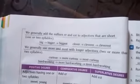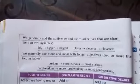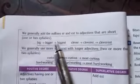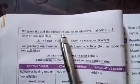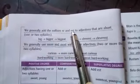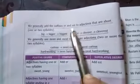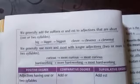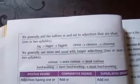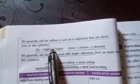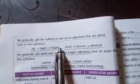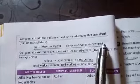We generally add the suffixes ER and EST to adjectives that are short. For example: big, bigger, biggest; clever, cleverer, cleverest. Suffixes are the set of letters that come at the end of a word and change its meaning. Here ER suffix lagaya, it becomes comparative, and here we use the suffix EST and it becomes superlative. In the same way: clever, cleverer, cleverest.